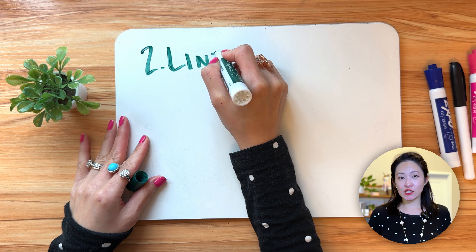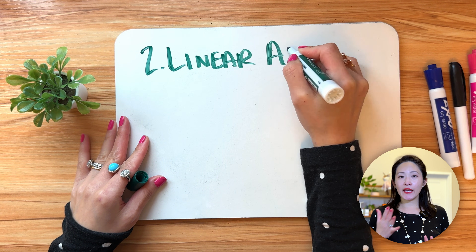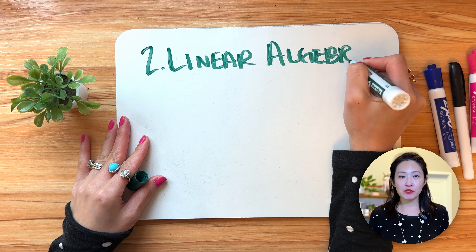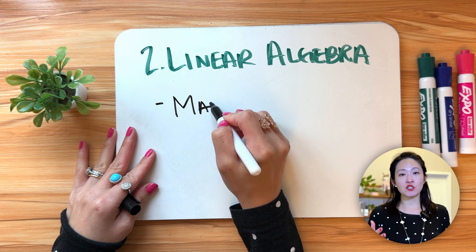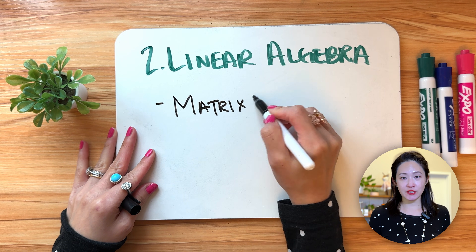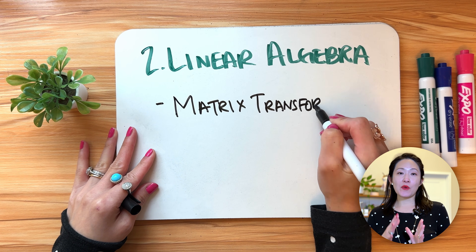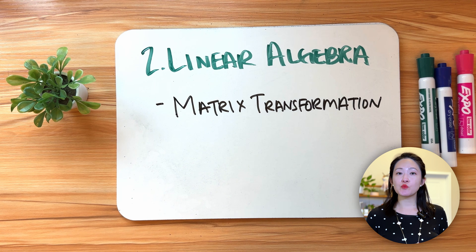Next, let's talk about linear algebra. At its core, AI is pretty much just a bunch of numbers — images, text, audio are all represented as numbers in a grid, which is called matrices. AI uses matrix transformations to manipulate and process data. For example, when AI recognizes your face in a photo, it processes the pixels as a matrix and transforms them mathematically to identify features.